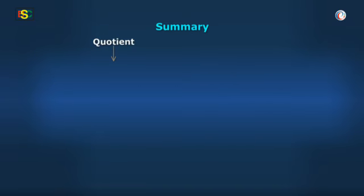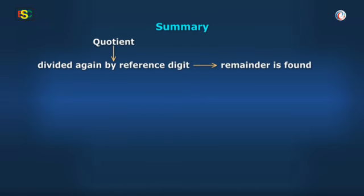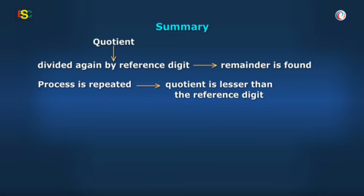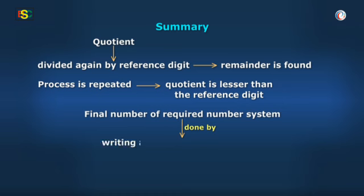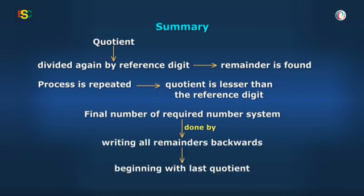The quotient will be divided again by the reference digit and the remainder is found. This process is repeated until the quotient is lesser than the reference digit. The final number of the required number system is obtained by writing all the remainders backwards, beginning with the last quotient which is lesser than the reference digit.